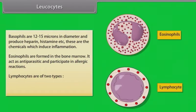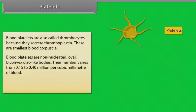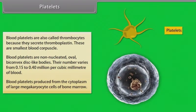Lymphocytes are of two types: B and T lymphocytes, which fight diseases. Blood platelets, also called thrombocytes, secrete thromboplastin. They are the smallest blood corpuscles — non-nucleated, oval, biconvex disc-like bodies. Their count varies from 0.15 to 0.40 million per cubic millimeter of blood. Platelets are produced from the cytoplasm of large megakaryocyte cells of bone marrow.